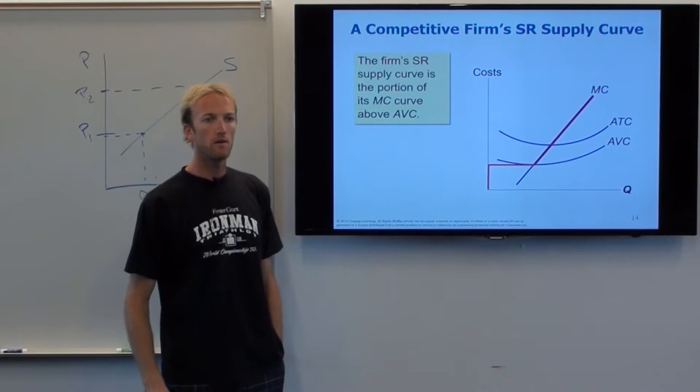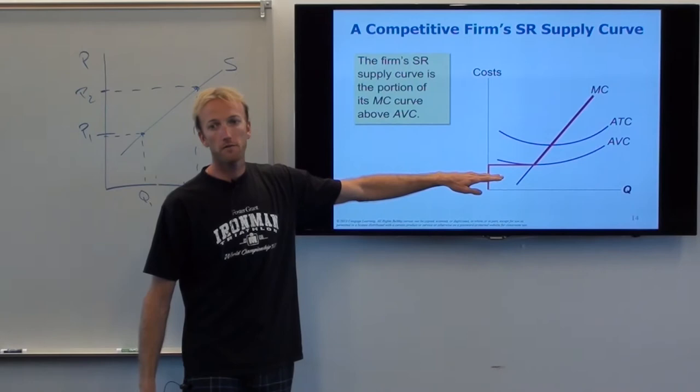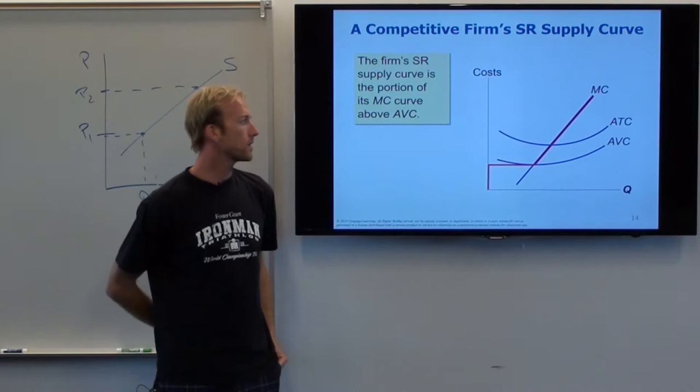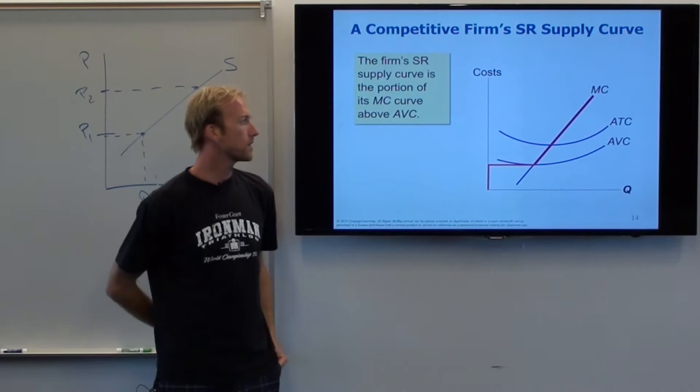This little red portion above AVC is the firm's supply curve. The second you tell the firm the price is below the AVC, the firm says it can't even make the product. Above AVC, the firm will still sell, and it'll sell at the quantity given by the marginal cost curve.